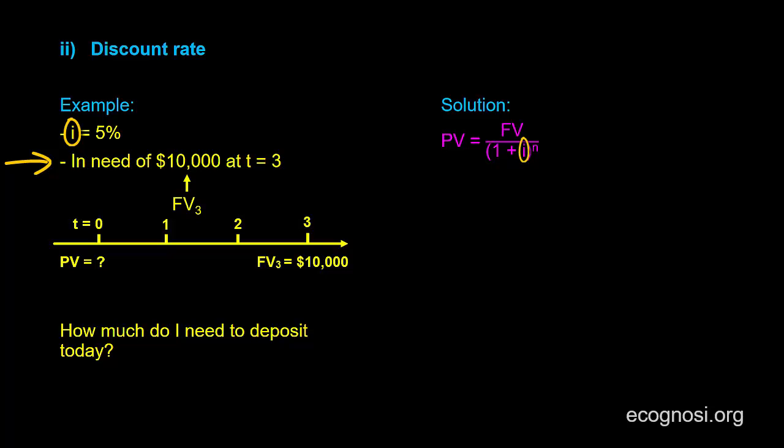Notice that I am using the I notation for the interest rate in our formula to be consistent with the notation used before. So the present value equals $10,000 over 1.05 to the third power, which equals $8,638.38 rounded to two decimals.